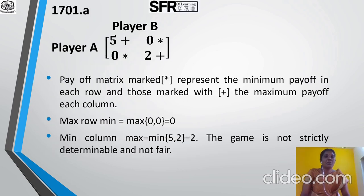Dear students, see Problem 1701, Example A. Player A, Player B. The payoff matrix entries are 5, 0, 0, 2. The payoff matrix — marked star — represents the minimum payoff in each row. Consider the first row (5, 0): the minimum element is 0, so put a star. Those marked with plus represent the maximum payoff in each column. For the second row, put plus at the entry 2, and consider column maximums: column (5, 0) has maximum 5; column (0, 2) has maximum 2. Put plus for the corresponding entries.